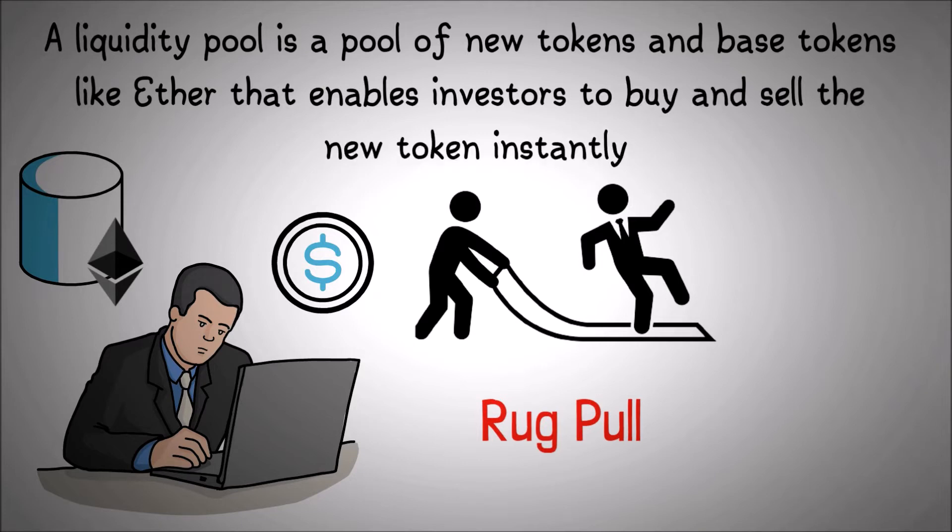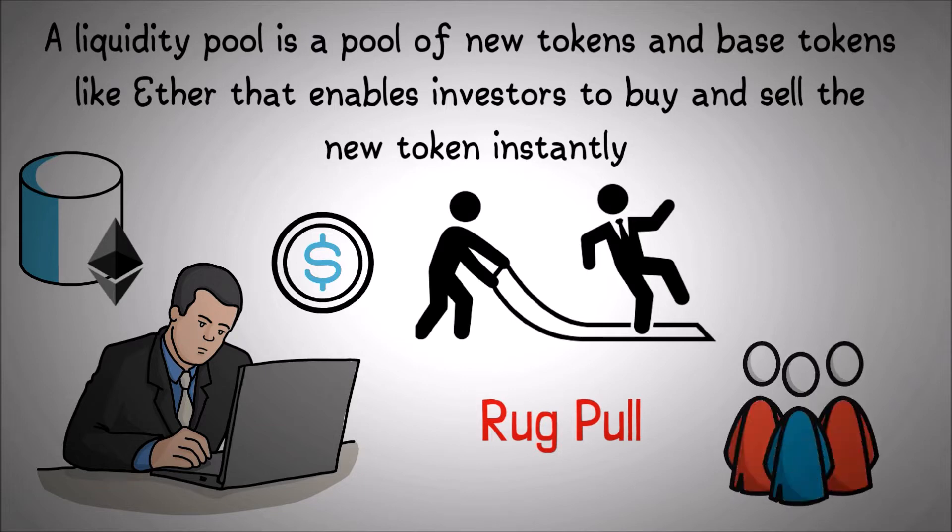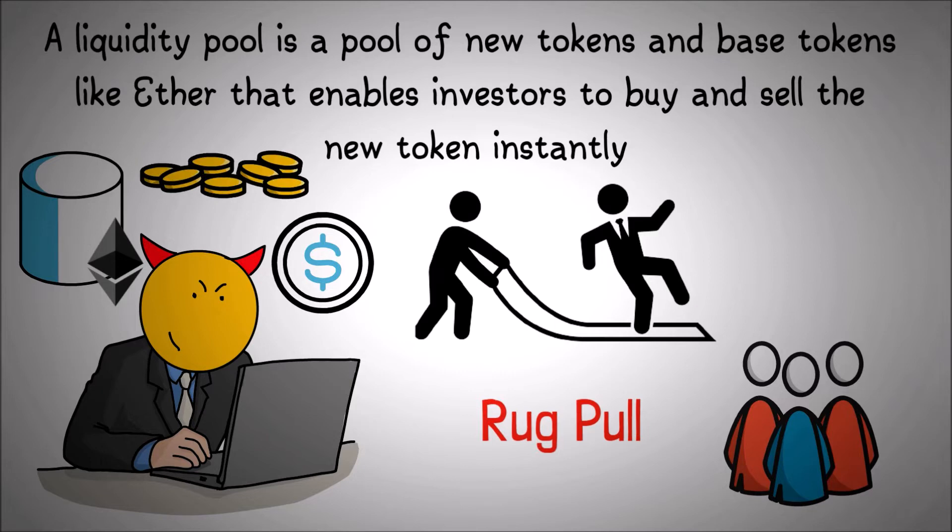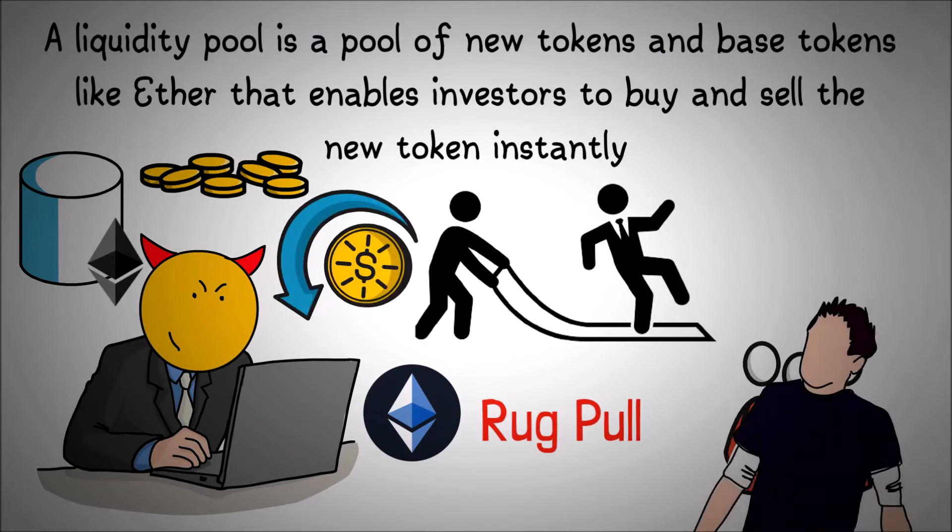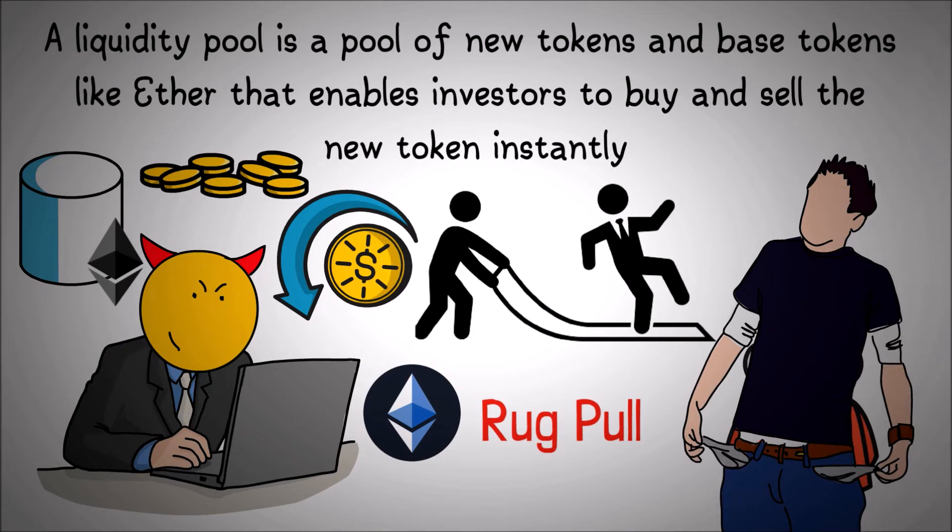In rug pull scams, though, once sufficient people contribute to the liquidity pool, the new token creators dump their new token into the liquidity pool in exchange for a base coin like Ether. This will send the price of the newly created token to near zero, leaving investors like me with worthless crypto while the rug pullers walk away with a profit.